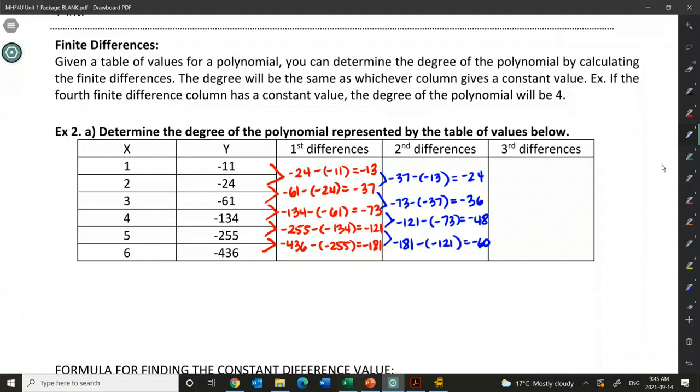So again, I do not have a column that is constant. They're all different. If I did have a column that was constant here, that would tell me I have a quadratic function. If I don't, I'm going to continue. Making sure that I'm being, again, careful with my math so that I don't mess up and then keep going to like the fifth finite differences when I don't need to. So we're going to do bottom minus top for each of these.